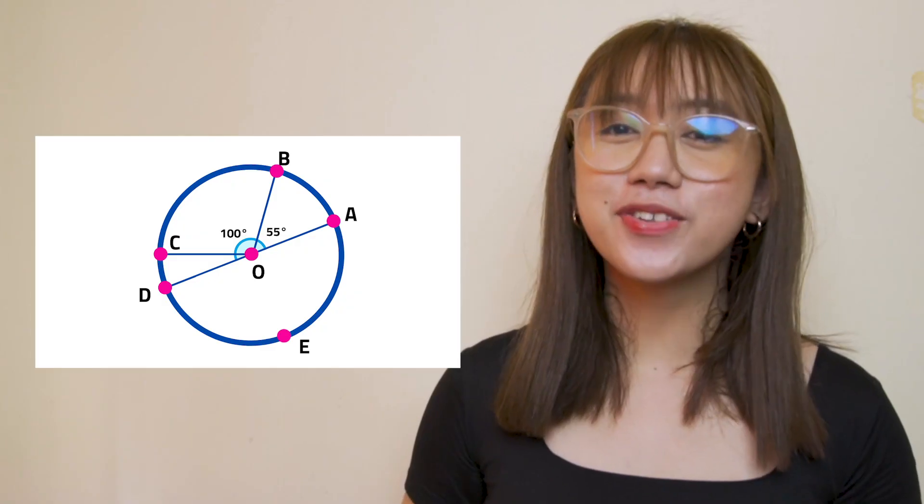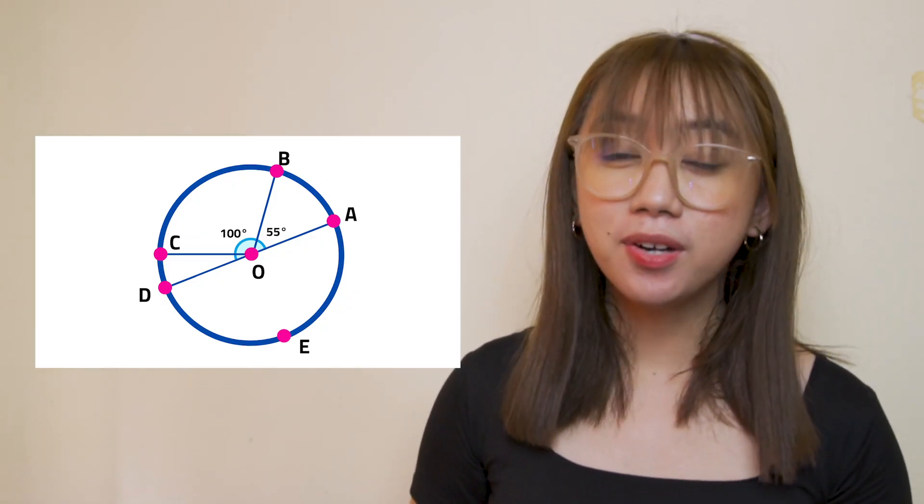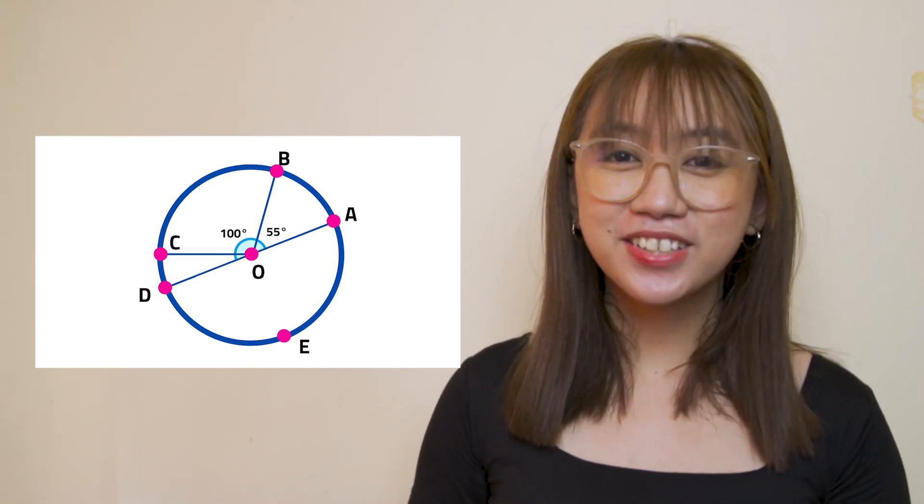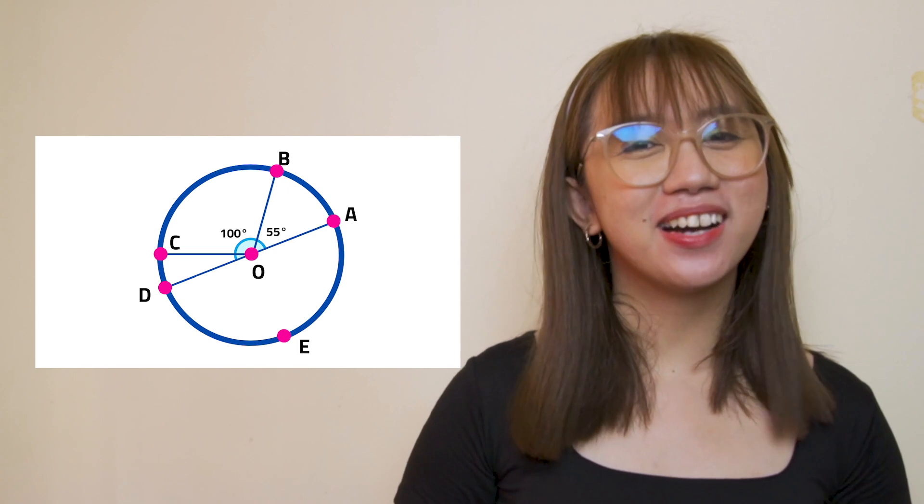Now, can you classify these arcs that I will show you? Just tell me if it's a semicircle, a minor arc, or a major arc. Are you ready? Let's begin! Is arc AB a semicircle, a minor arc, or a major arc? Great! It's a minor arc.